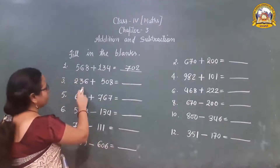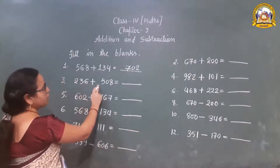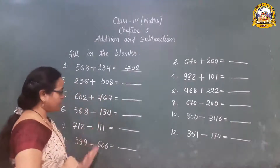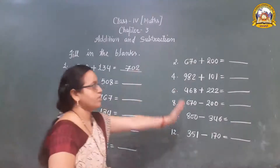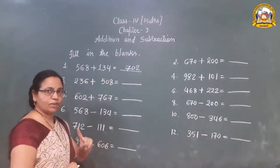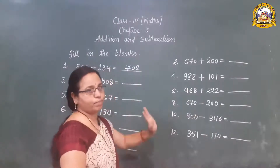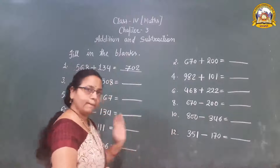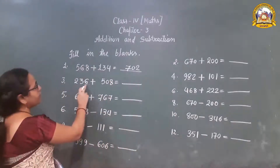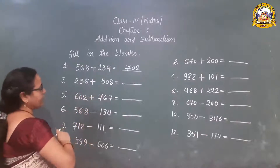Next question: 236 plus 501. There are two parts — one part is here, another part is here. I will solve one part; the other part is for homework. You have to solve that part. So next: 236 plus 508.